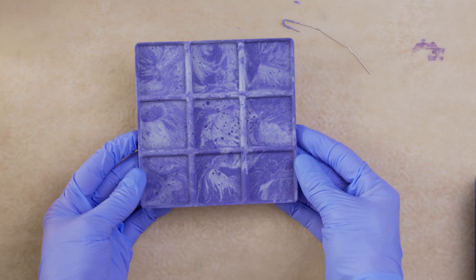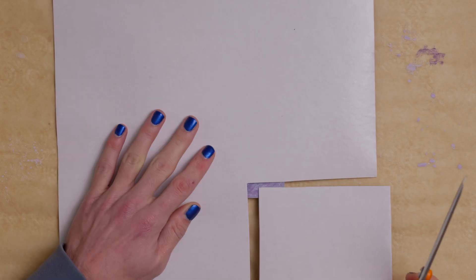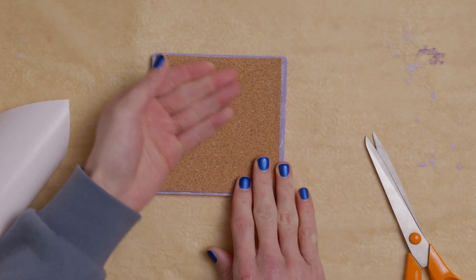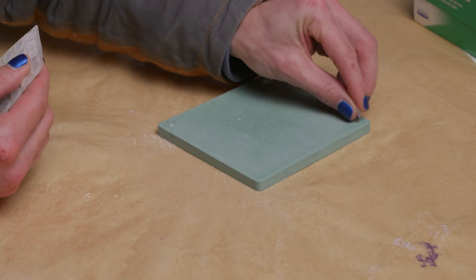Once your castings are cured, you can do a wet sand on the bottom and then stick on some cork pad or silicone feet to give it a bit more grip and protect any surfaces you're going to put this on.